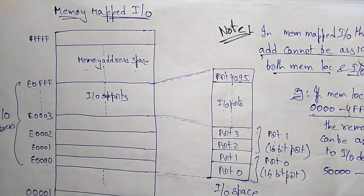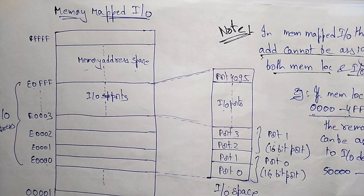So in memory mapped I/O, the main thing to note is that it uses only one address space, and that address space is assigned to both memory locations as well as I/O devices. The same address cannot be assigned to both memory locations and I/O devices. Thank you.